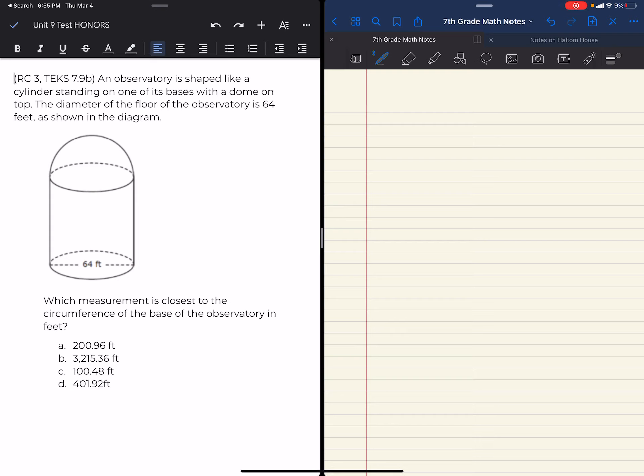So I'm finding the circumference of a circle which I know to be either pi times diameter or 2 pi r. The only difference there is I'm multiplying 2 times r, which is the radius, to get the diameter. Either one works, it just kind of depends on what they give me. They gave me the diameter of the floor is 64.